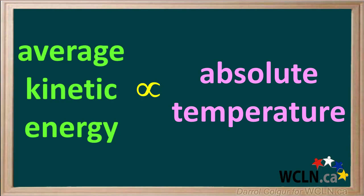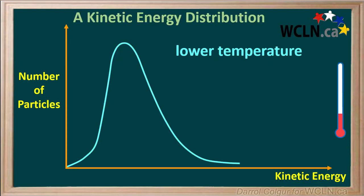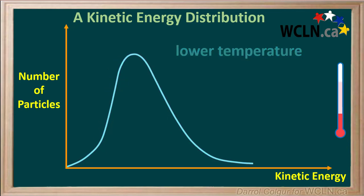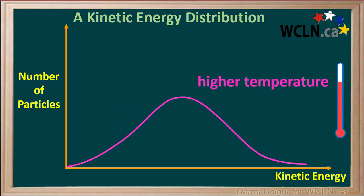The higher the absolute or Kelvin temperature, the greater the average kinetic energy. The kinetic energy distribution for the particles at the lower temperature might look something like this. How do you think this curve will change if we increase the temperature? Let's see. We see at the higher temperature, the curve changes quite a bit — it moves more to the right and spreads out.